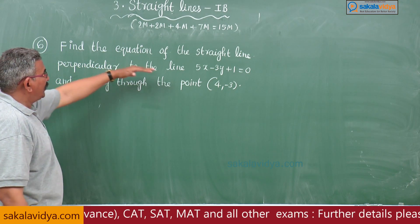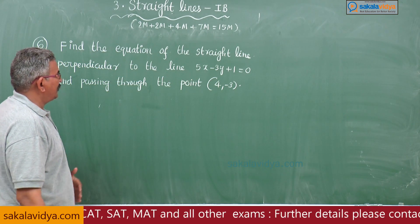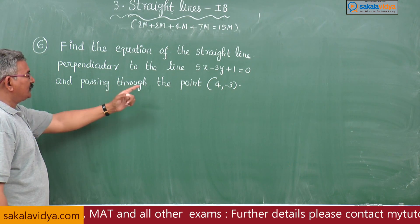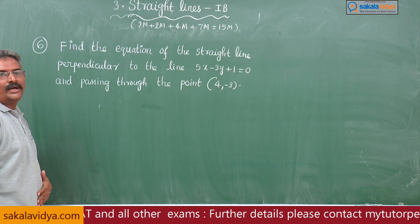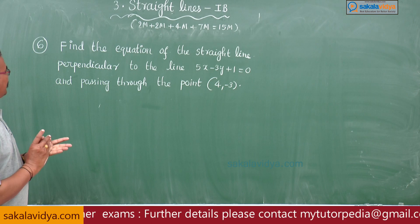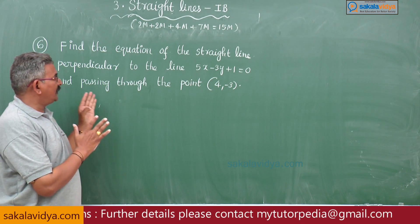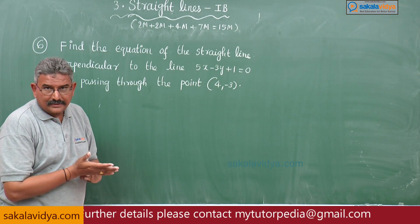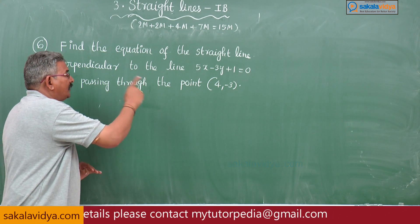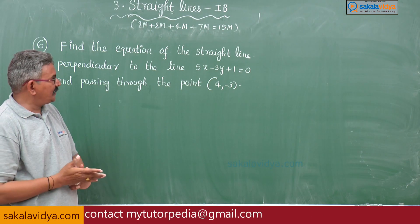Sixth problem: find the equation of the straight line perpendicular to the line 5x minus 3y plus 1 is equal to 0 and passing through the point 4 comma minus 3. The required equation of the line is perpendicular to 5x minus 3y plus 1 is equal to 0.